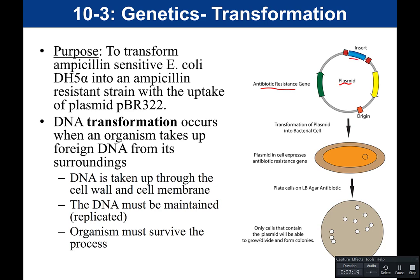The plasmid also has some sort of insert. This piece of DNA needs to get into the bacterial cell. Once in, it must be maintained and replicated so that when the cell divides, offspring also carry the plasmid. The plasmid replicates independently of the host chromosome. The organism must also survive the process, since a process that kills the organism would not be successful.